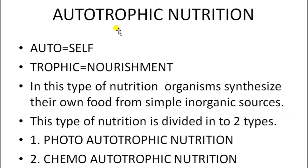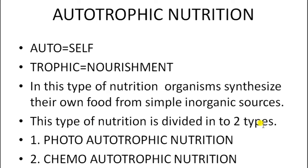In autotrophic nutrition, 'auto' means self and 'trophic' means nourishment. In this type of nutrition, organisms synthesize their own food material from simple inorganic substances. Autotrophic nutrition is also divided into two types: photoautotrophic nutrition and chemoautotrophic nutrition.